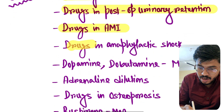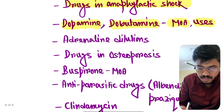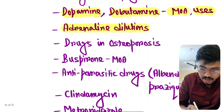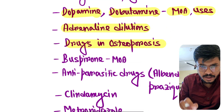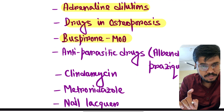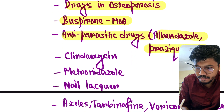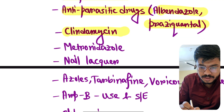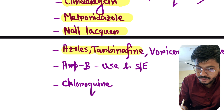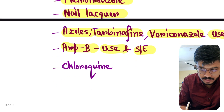Drugs in post-operative urinary retention. Drugs in acute myocardial infarction. Drugs in anaphylactic shock. Dopamine and dobutamine: mechanism and uses. Adrenaline dilutions — all the dilutions are important. Drugs in osteoporosis — very very very important topic, especially the bisphosphonates. Buspirone mechanism. Anti-parasitic drugs, especially albendazole and praziquantel. Clindamycin, metronidazole, nail lacquer azoles, terbinafine, voriconazole uses. Amphotericin B uses and side effects.